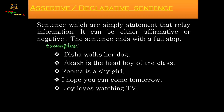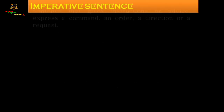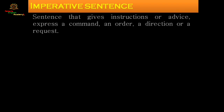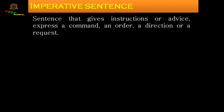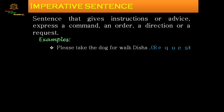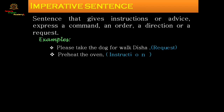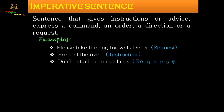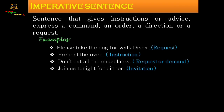Now let's move to imperative sentences. Imperative sentences give instructions, advice, express a command, an order, a direction, or a request. In these types of sentences, where you are commanding someone, requesting someone, giving instructions, advice, or an invitation — all of these are imperative sentences.